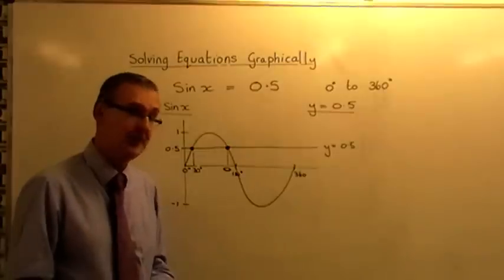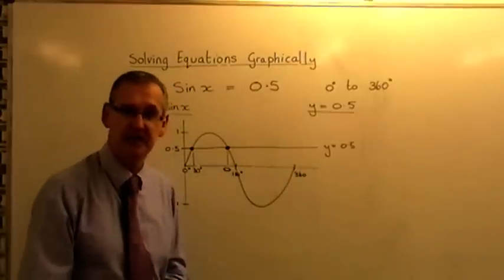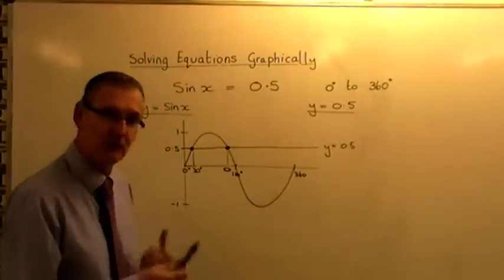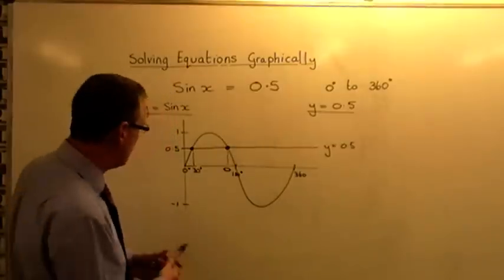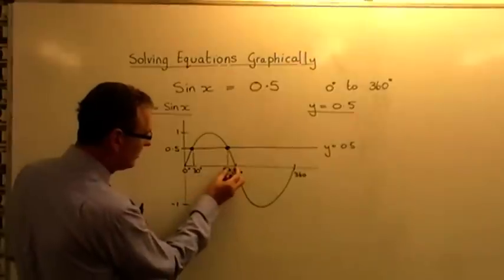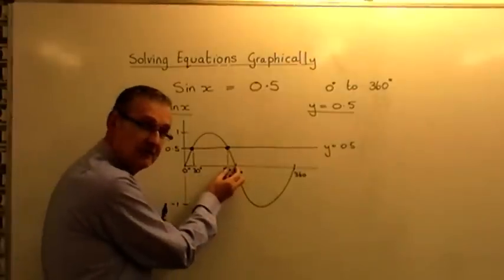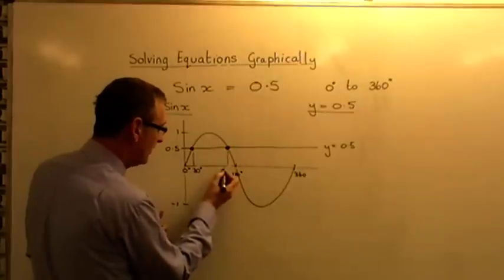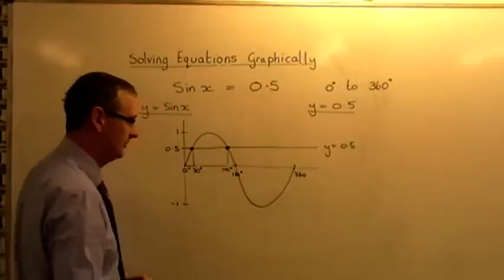Now, some of you may notice the symmetry of the sine wave that's taking place. This is just an aside now because it's not really what this video is about. If that from there to there is a gap of 30 degrees, then from symmetry that would be a gap of 30 degrees as well. And so actually I know that that would be 150 degrees.